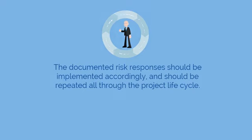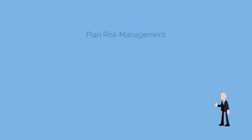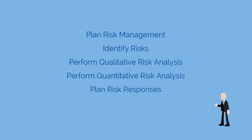Now let's take a look at the six processes of project risk management. The processes are: plan risk management, identify risks, perform qualitative risk analysis, perform quantitative risk analysis, plan risk responses, and monitor and control risks.